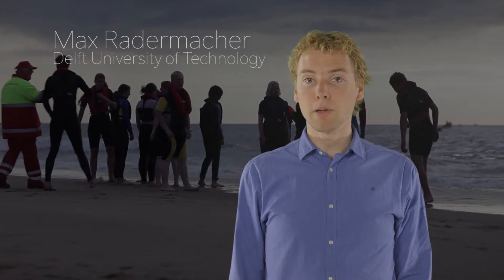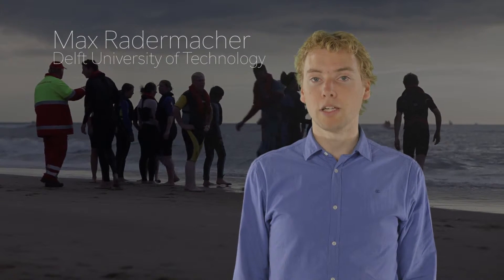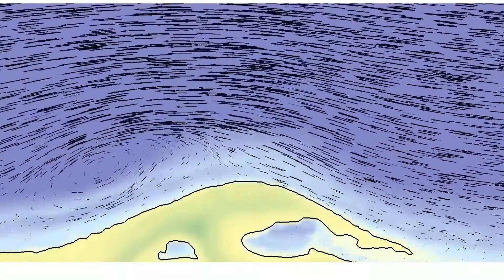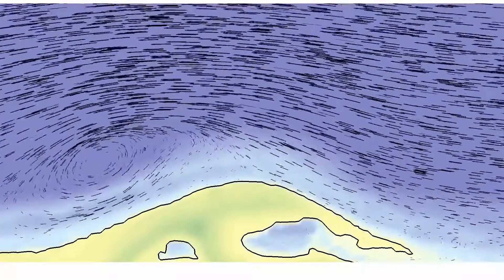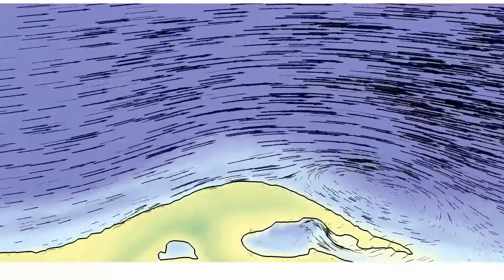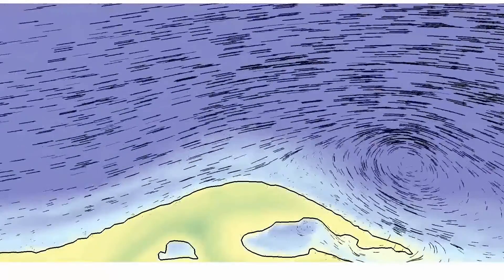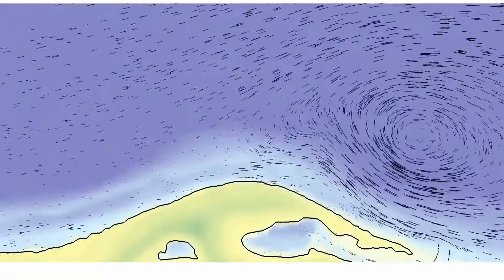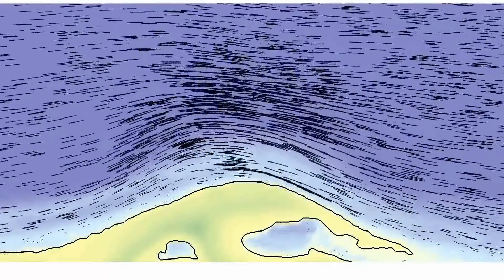I investigate the impact of the sandmotor on waves and currents and therefore also on swimmer safety. I have found out that the tidal currents around the sandmotor, which flow up and down the coastline, separates from the shoreline at the sandmotor and therefore creates very big circulating currents or eddies, and this also locally generates offshore flowing currents and in general makes the flow much less predictable, which is therefore relevant for swimmer safety.